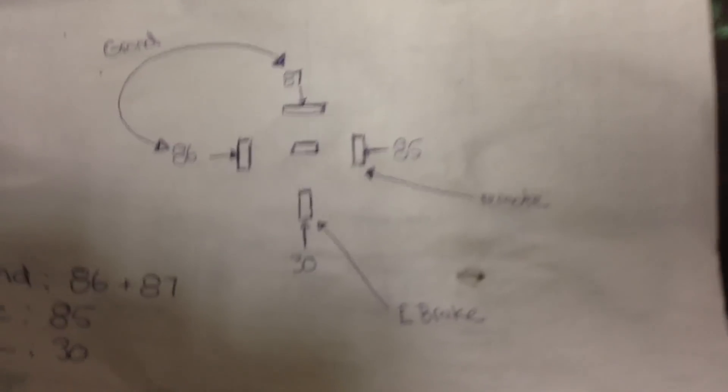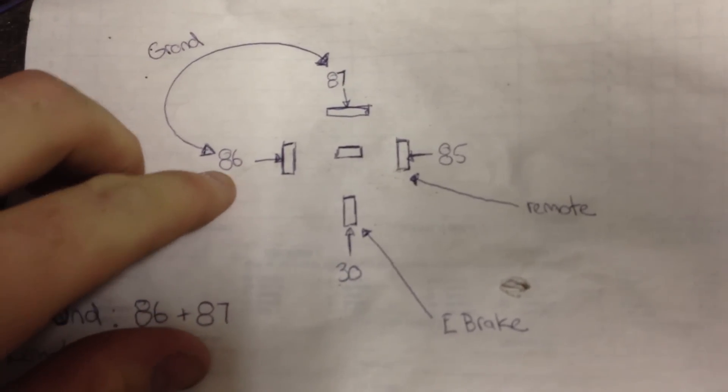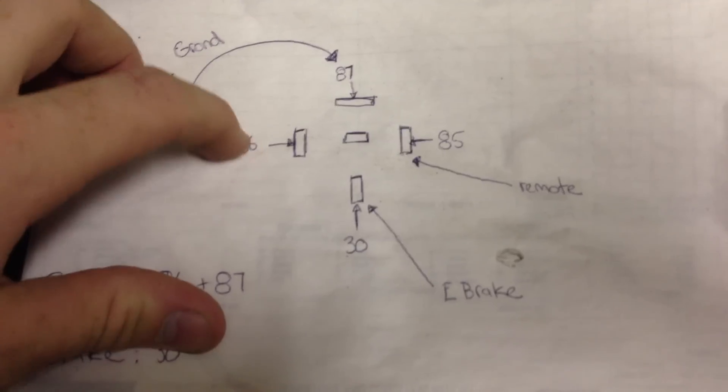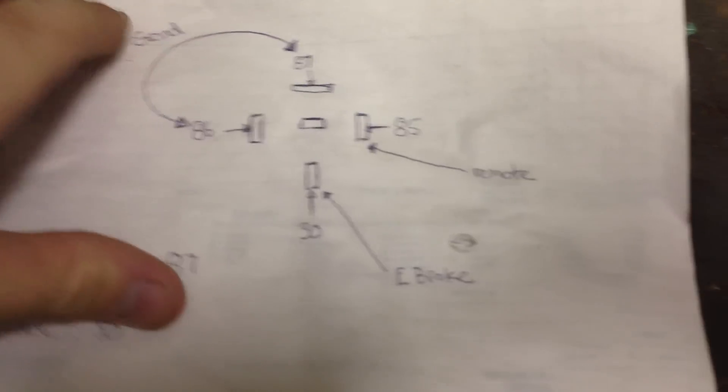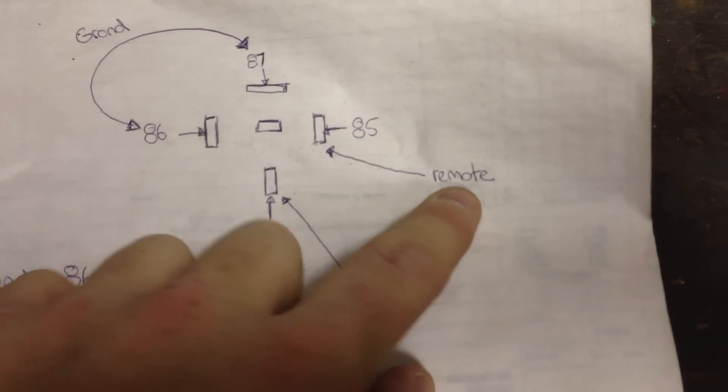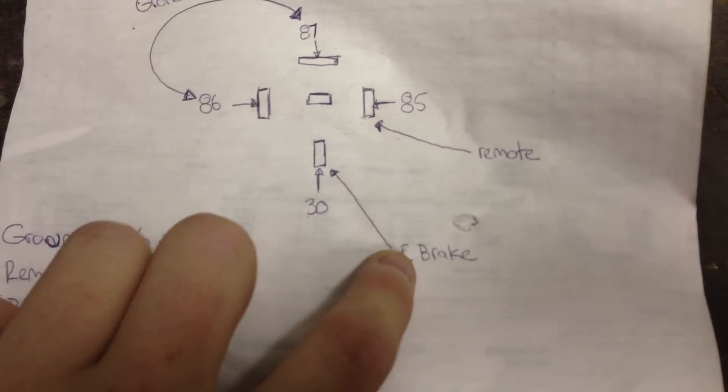Here's the diagram. Pretty much you connect both of these, pin 86 and pin 87, hook them up together, and then those both need to be grounded. Pin 85 needs to be connected to your remote wire, and pin 30 needs to be connected to your e-brake. Then it should work fine.